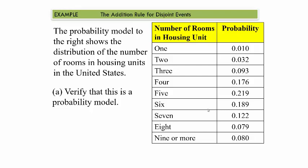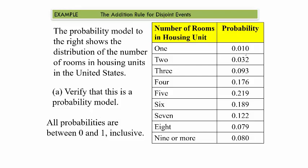Let's work a problem from a table. The probability model shows the distribution of the number of rooms in housing units in the United States. For example, the probability a housing unit has one room is 0.01, two rooms is 0.03, and so on. To verify this is a probability model, we check two things: all probabilities are between 0 and 1, and if you sum all the individual probabilities they equal 1. This table satisfies both conditions.